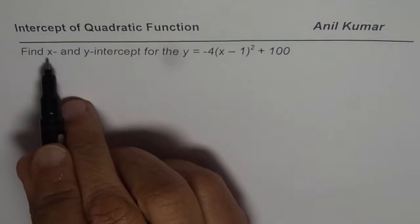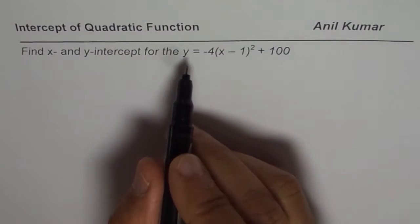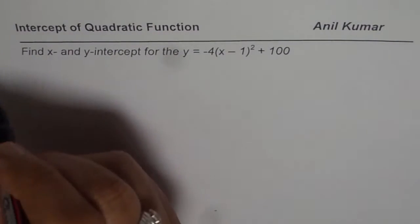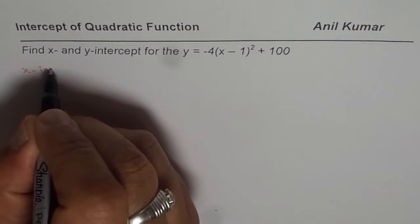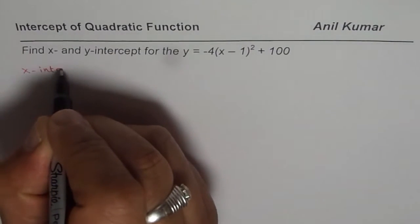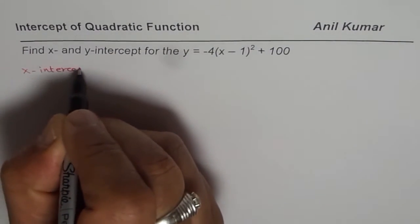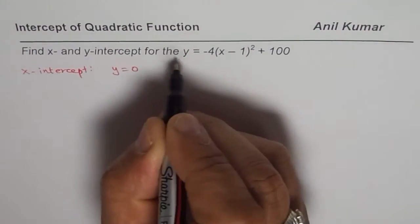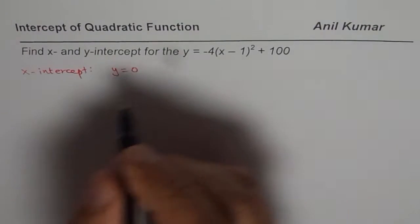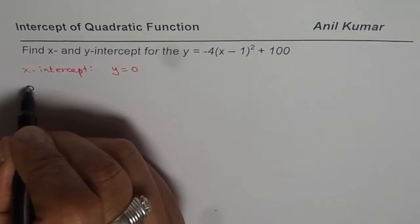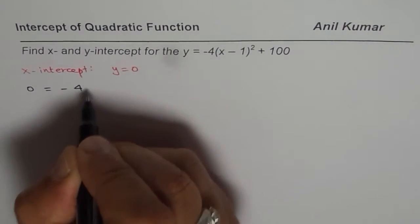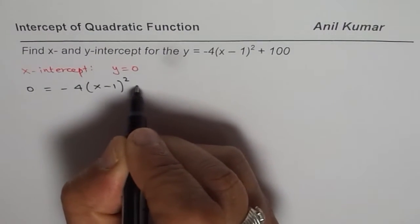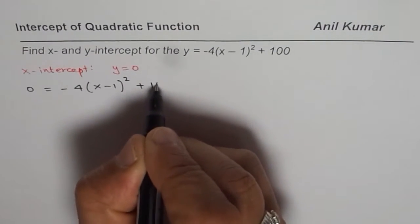Now to find the x-intercept, y is 0. So let us begin by finding the x-intercept. When we say x-intercept, we mean y equals 0. If I substitute y equals 0, I get 0 equals minus 4 times (x minus 1) squared plus 100.